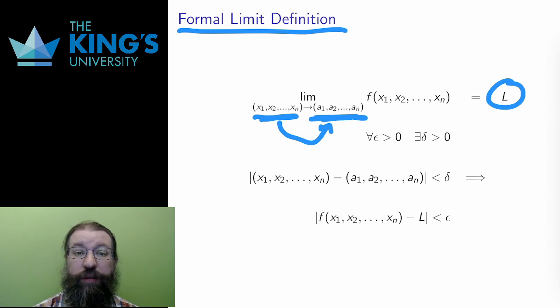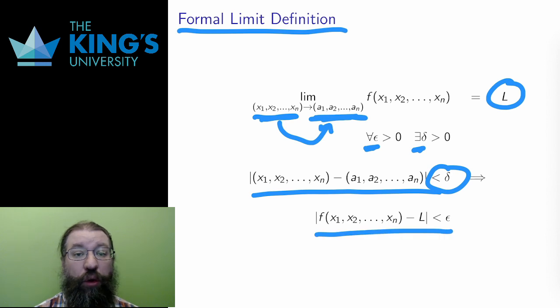The limit of the function approaching the point (a₁ to aₙ) is equal to L means that for all epsilon greater than 0, there exists a delta greater than 0, such that when the input is close to the special point within some tolerance delta, the output is also very close to the special value L within some small tolerance epsilon.